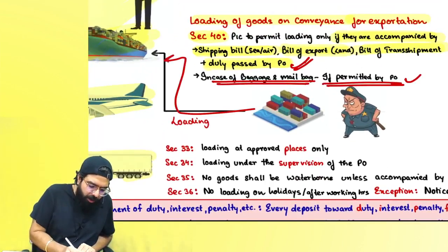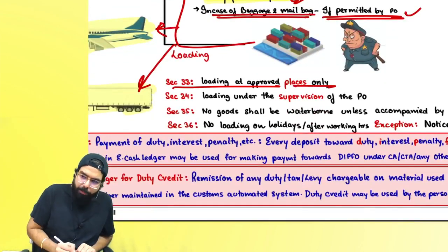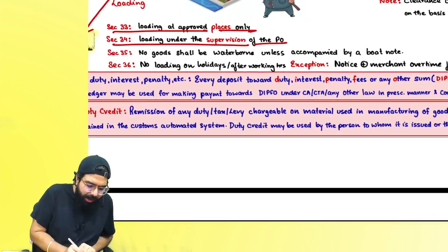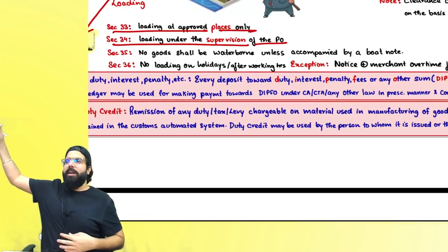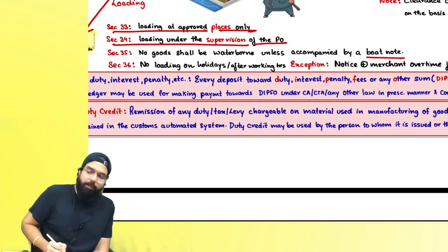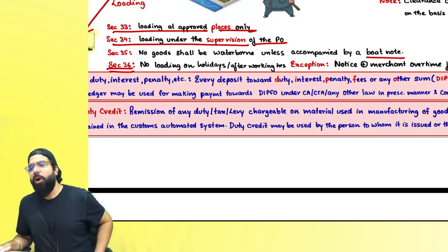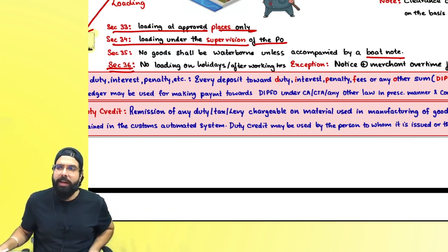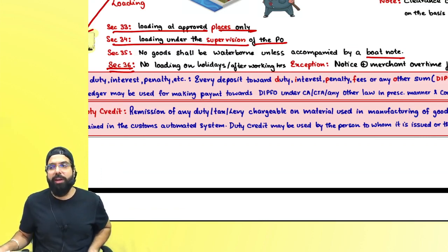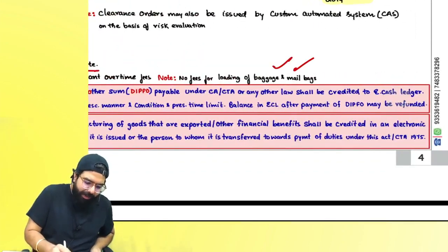Loading will happen at approved places under the supervision of the proper officer. If the mother vessel is standing far away, small boats can be used accompanied by a boat note — told by section 35. Section 36: no loading on holidays or after working hours unless prior notice is given and merchant overtime fees are paid. No fees for loading of baggage and mail bags.